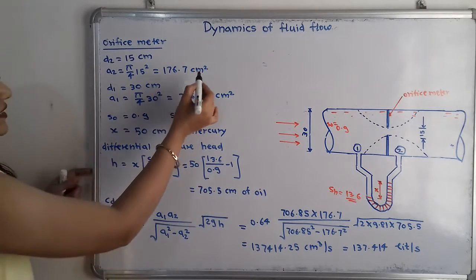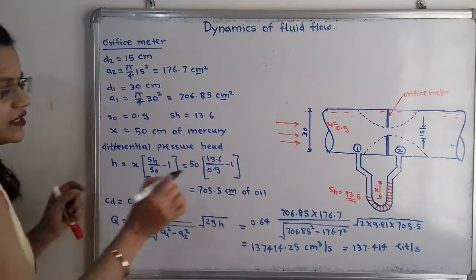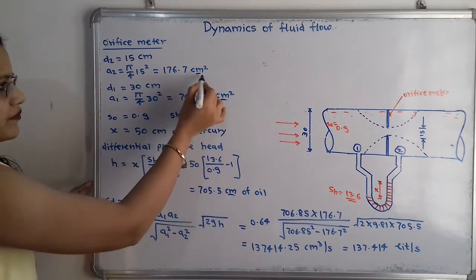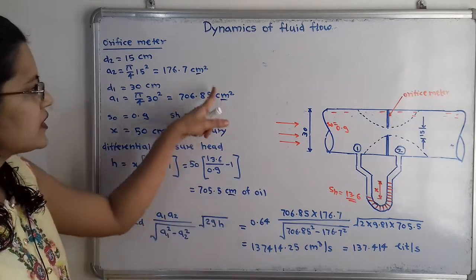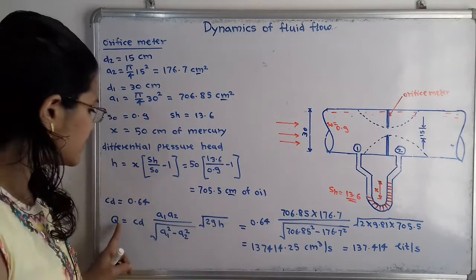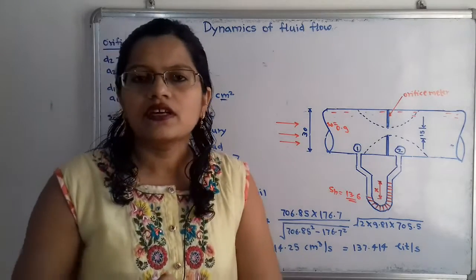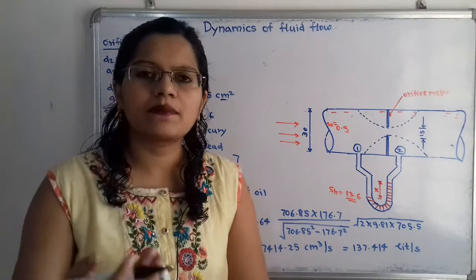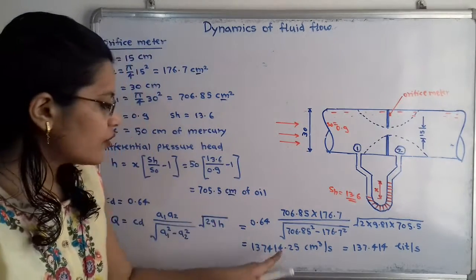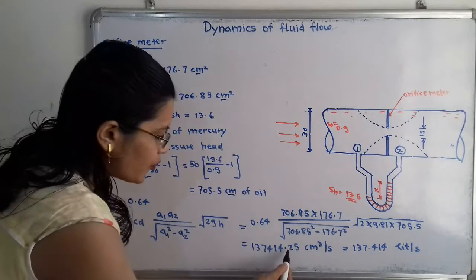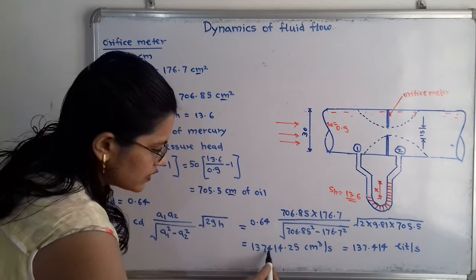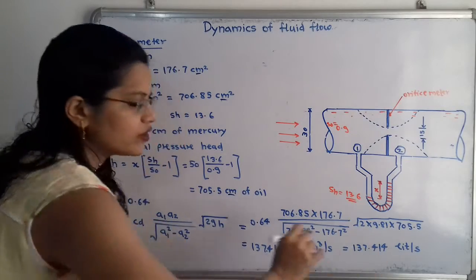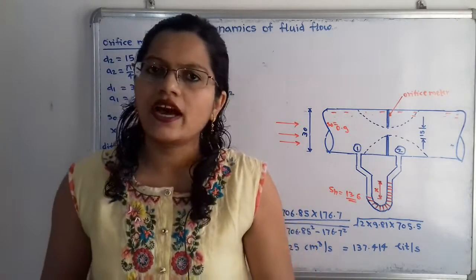All the units are in centimeters — centimeter square and centimeter — so remember all units should be consistent, either centimeter or meter. Here all units are centimeters, so Q has the unit centimeter cube per second. To convert to liters per second, multiply by 10 raised to minus 3, shifting the decimal point three places to the left, giving 137.414 liters per second. This is the final answer.